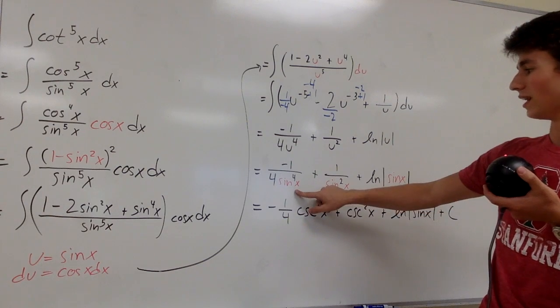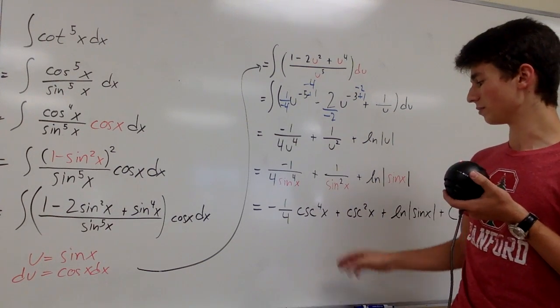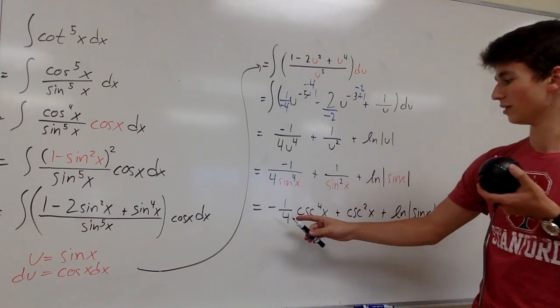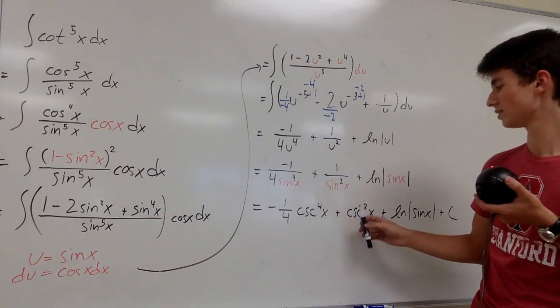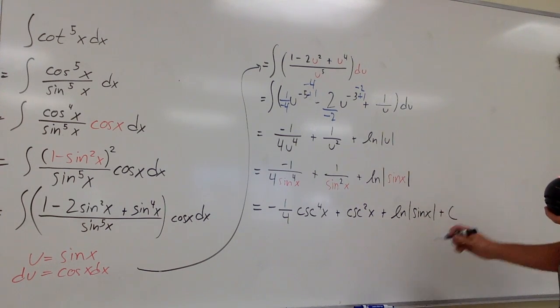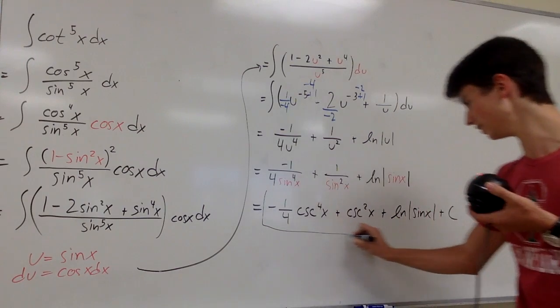And last, we can bring the sines up to the top and make them cosecants. And our final answer is negative one fourth cosecant to the fourth of x plus cosecant squared of x plus natural log of sine of x plus c because it's an indefinite integral.